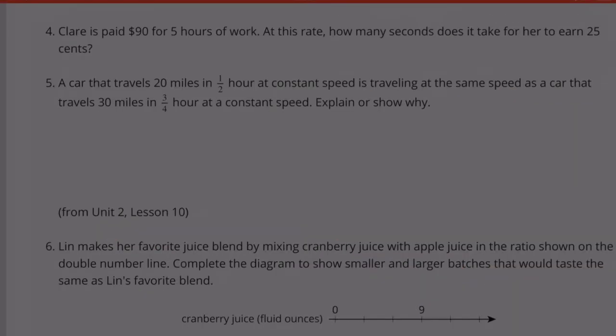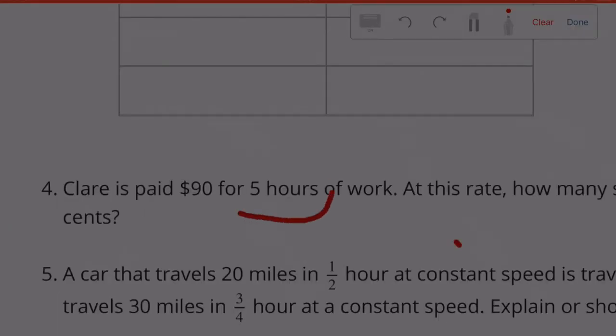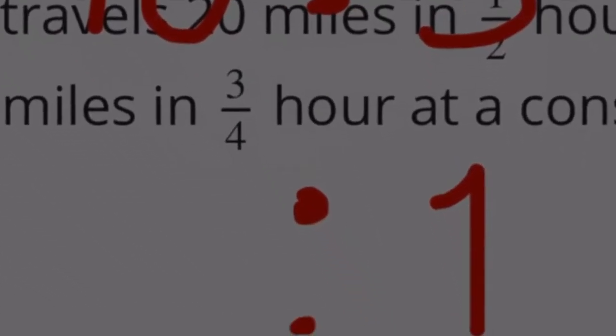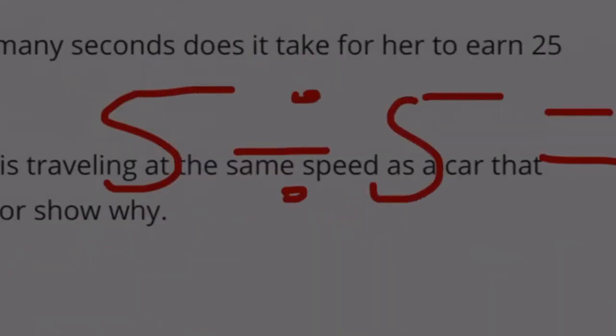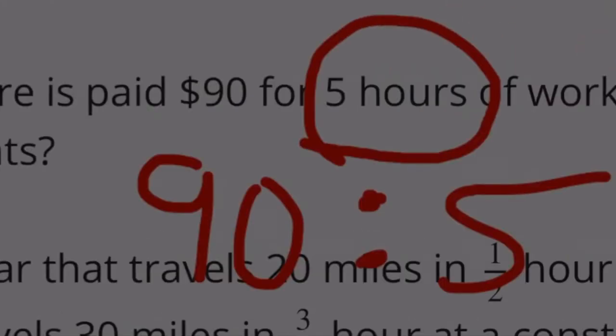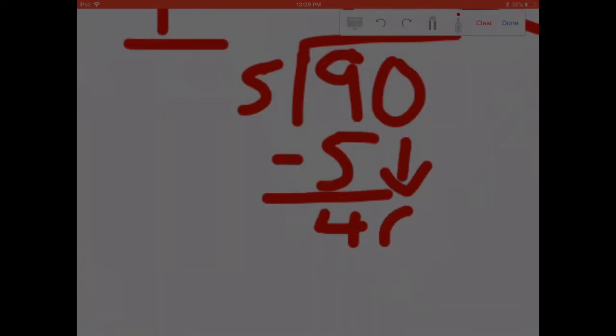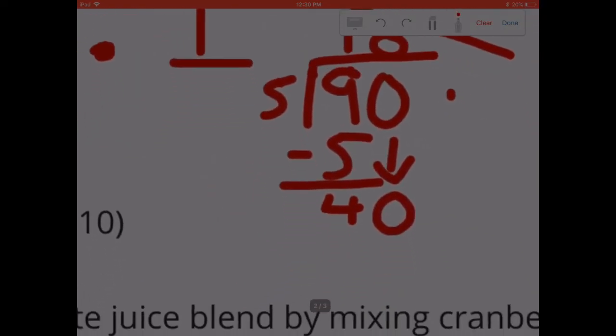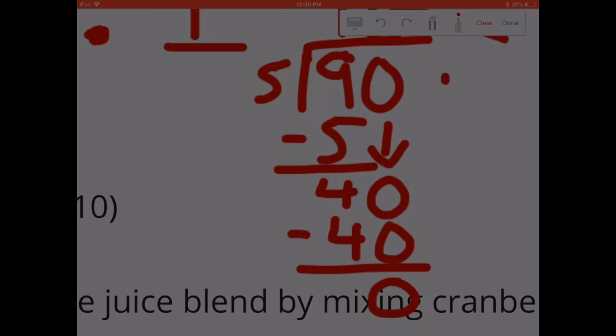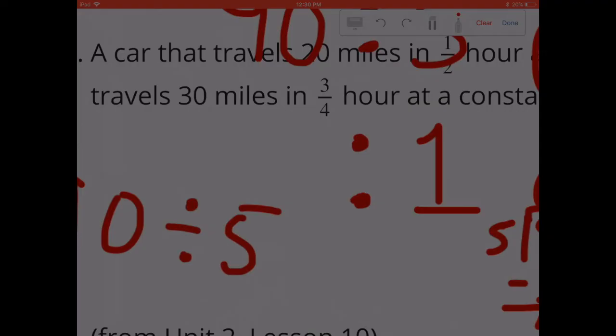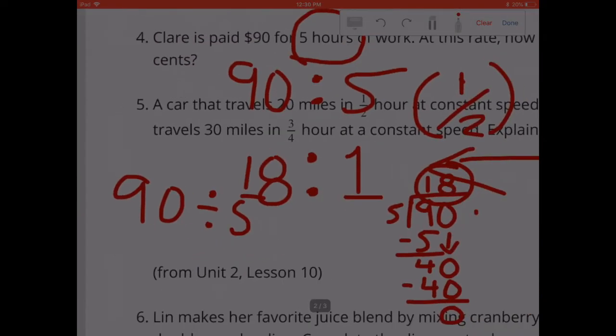Number 4, Claire is paid $90 for 5 hours of work. At this rate, how many seconds does it take for her to earn 25 cents? First, let's figure out what she's going to be paid for 1 hour of work. So we have a ratio of $90 to 5 hours of work. Let's just make that now 1 hour of work. So what did we do to the 5 to make it 1 hour? Dividing it by 5. 5 divided by 5 brings me to 1. We need to do 90 divided by 5. 5 goes into 9 once. 1 times 5 is 5. 4 left over. Bring down the 0. 5 goes into 40 eight times. 8 times 5 is exactly 40. So that would be $18. It looks like it's $18 for 1 hour.